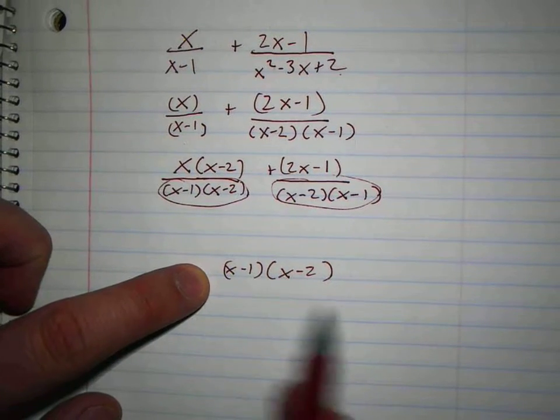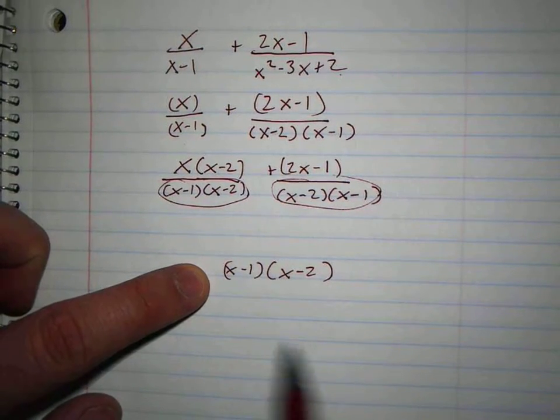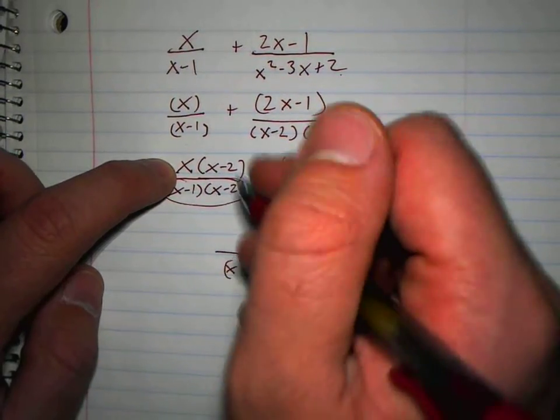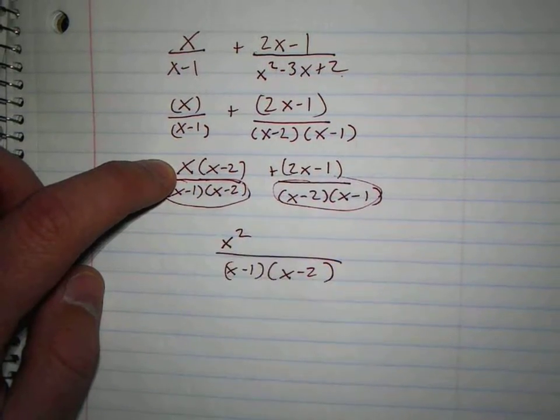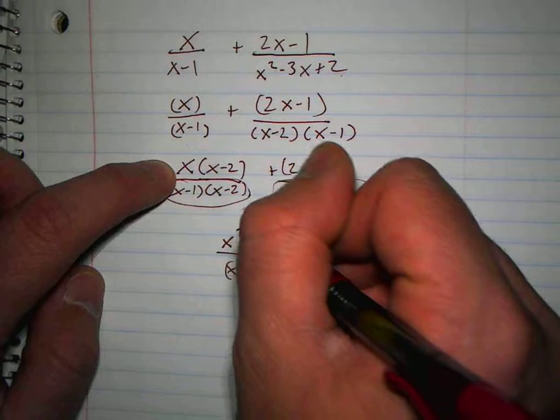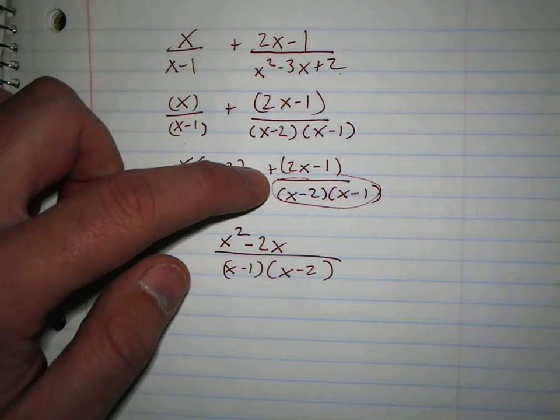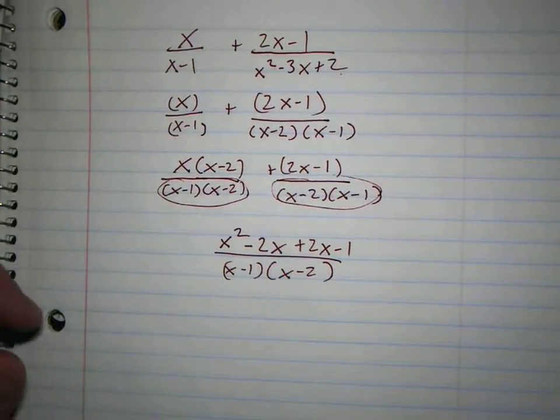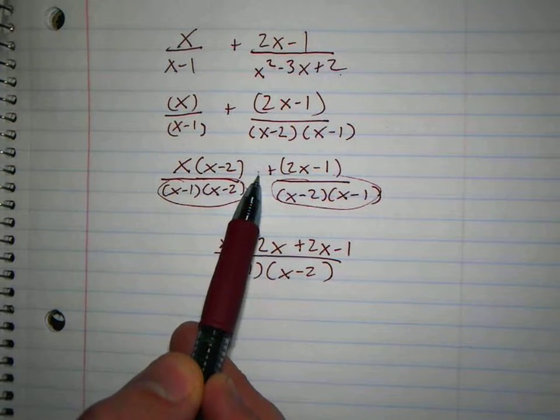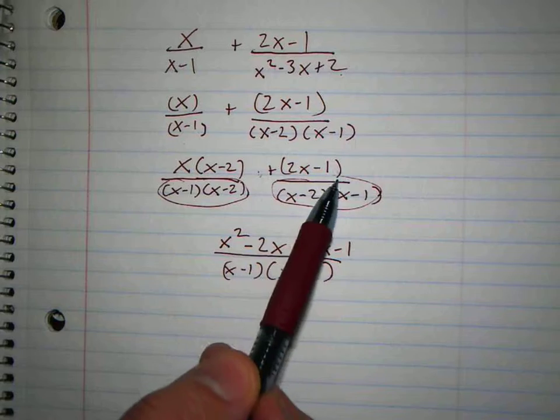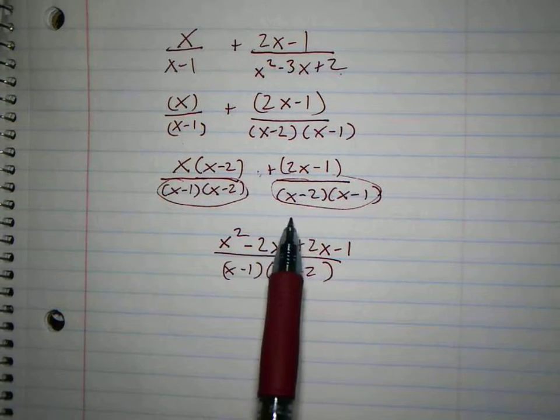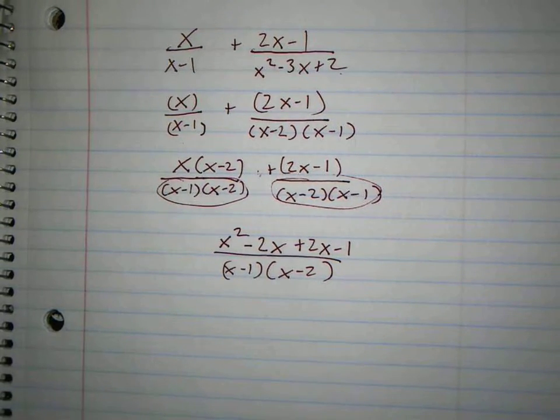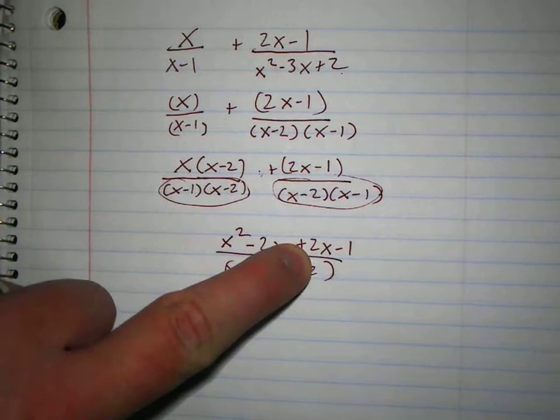By the way, any time you have factors in the denominator, never distribute them. Never. You just leave them factored. But in the numerator, what's x times x? x squared. And x times minus two? Negative two x. Here it's a plus sign, okay? So that would be plus two x minus one. Important, if that were a minus sign, you have to distribute the minus to two x and a minus to a minus one, so you would actually get minus two x plus one. So that's the difference between a plus sign and a minus sign. If it's a plus sign, you can just bring it down.